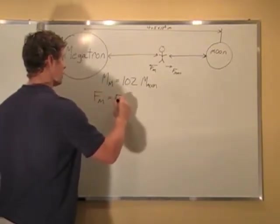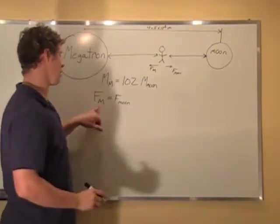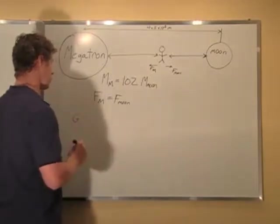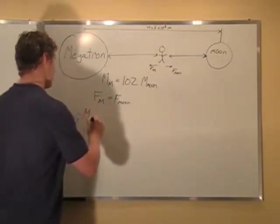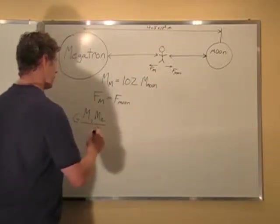Force Megatron equals force moon. Since the forces there are equal, you can just say that they're equal. So gravitational force is G, M1, M2, over R squared.